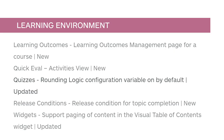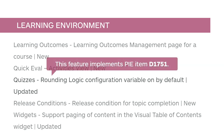Arithmetic and significant figures questions now round up from 0.5 by default. This feature implements PI item D1751.